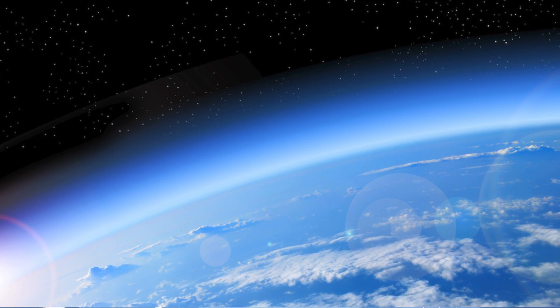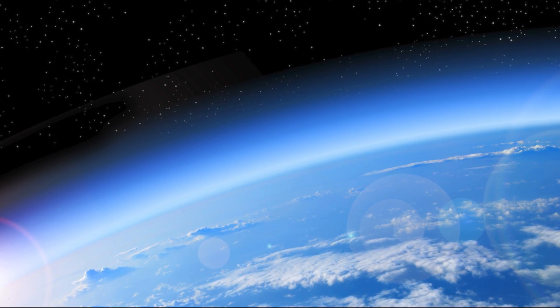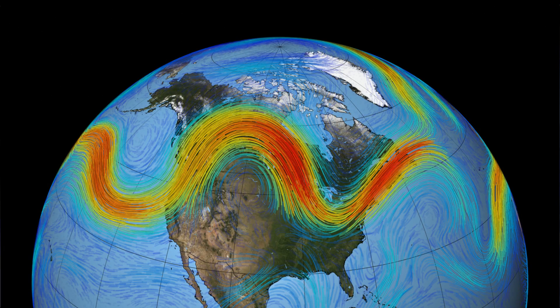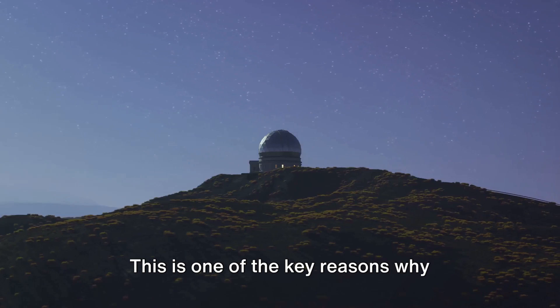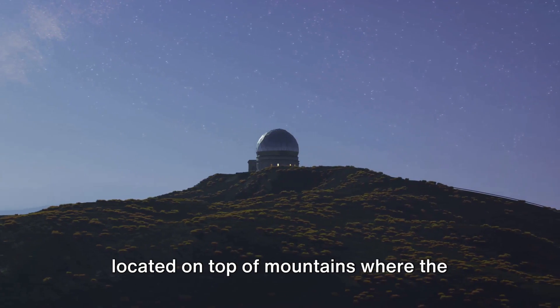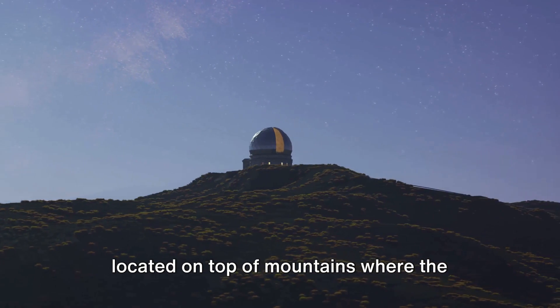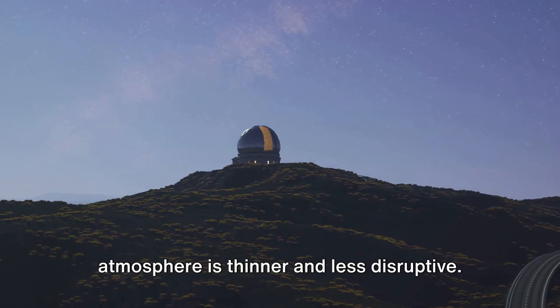But there is a twist. Our Earth's atmosphere with all its turbulence and the jet stream can often limit sharp images to around 200 times magnification at sea level. This is one of the key reasons why professional observatories are often located on top of mountains, where the atmosphere is thinner and less disruptive.